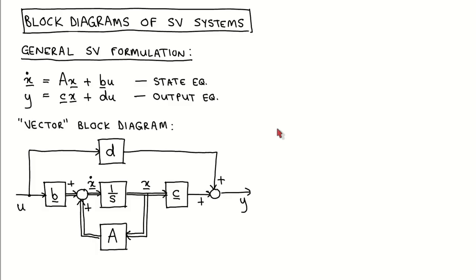We first look at the block diagram for a general state variable system. For the general state variable equations, this is the equivalent block diagram representation. We call it the vector block diagram since some signal lines denote vectors of signals. We draw such signal lines with double lines.